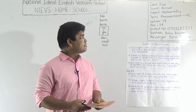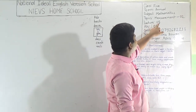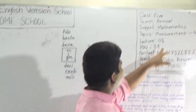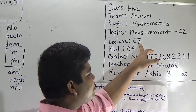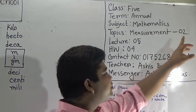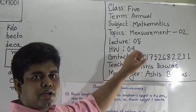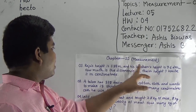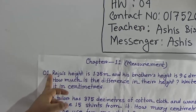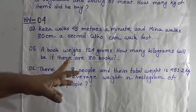My dear students, today's topic is lecture number 5. In our lecture, we shall solve Measurement 2, class work SW number 4. In Chapter 11, Measurement, we shall solve Question number 1, 2, and 4 as class work. And questions 3, 5, and 6 will be your SW number 4.